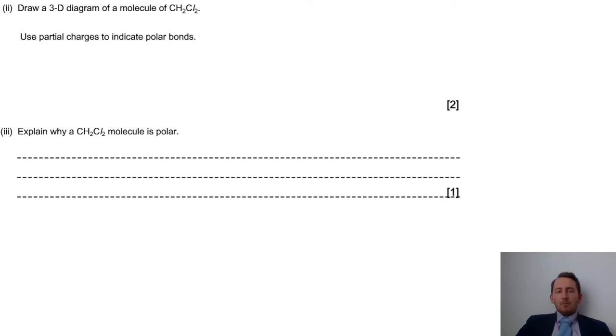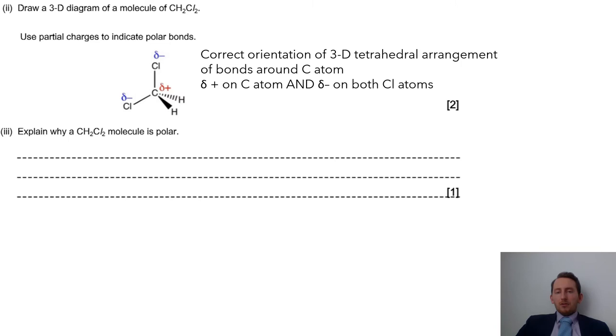Next part of the question: we are asked to draw a 3D diagram of CH2Cl2 with partial charges to indicate polar bonds, worth two marks. Because we have a carbon that has four things bonded to it, we should be looking at a tetrahedral shape. We have our two chlorines and our two hydrogens. Make sure we have the two bonds that are in the plane of the paper, and then we have a hash and a wedge bond showing coming forward and going backwards for our hydrogens there. To add partial charges, chlorine will be slightly delta negative and our carbon slightly delta positive. So we need that 3D tetrahedral arrangement and then the charges on there, giving us two marks.